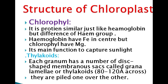Each granum has a number of disc-shaped structures. These disc-shaped structures of the granum are called granum lamella or thylakoids. They are disc-like structures about 80 to 120 angstroms (10⁻¹⁰ m) in thickness, and they are stacked one over the other.